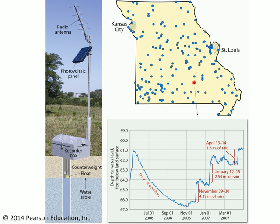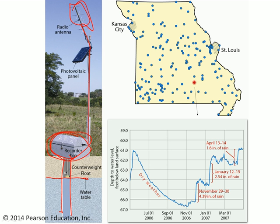Now, we can monitor groundwater using wells. These wells look something like the image over on the left, where we've got a little counterweight going down into an empty hole in the ground and a little float. As the water table moves up and down, it makes that float go up and down. That gets recorded in a little recorder box, and then it gets broadcast out to a network via that antenna.